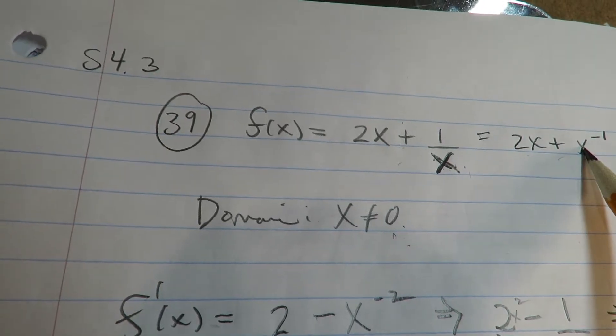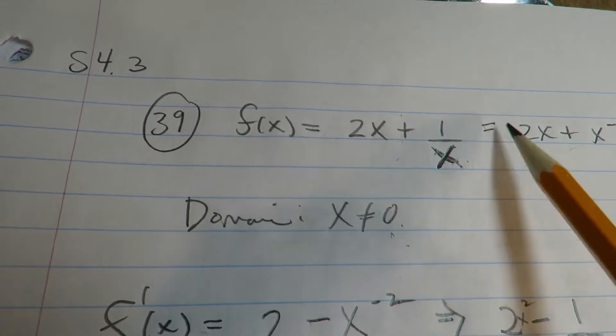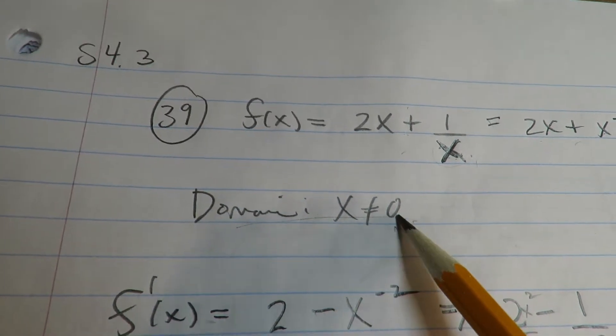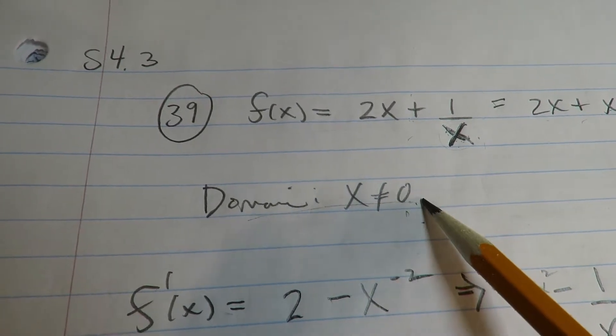So the first thing I did was I brought this up, and I also noted that you can't divide by zero. So this has a domain restriction here. For this function, x cannot be zero.